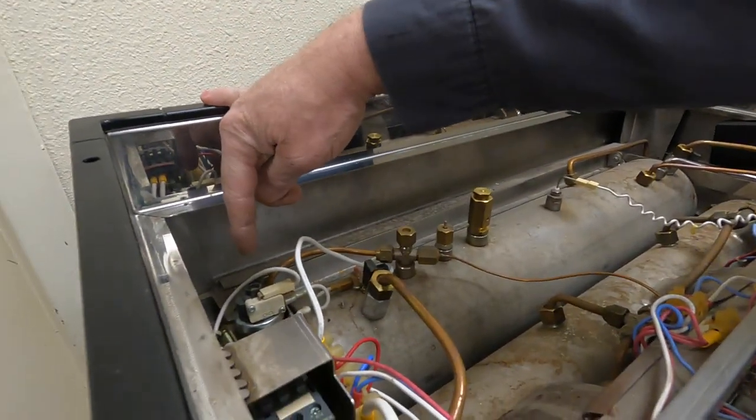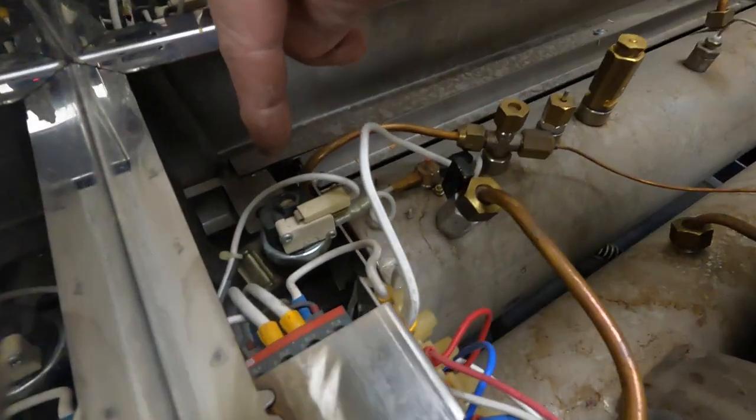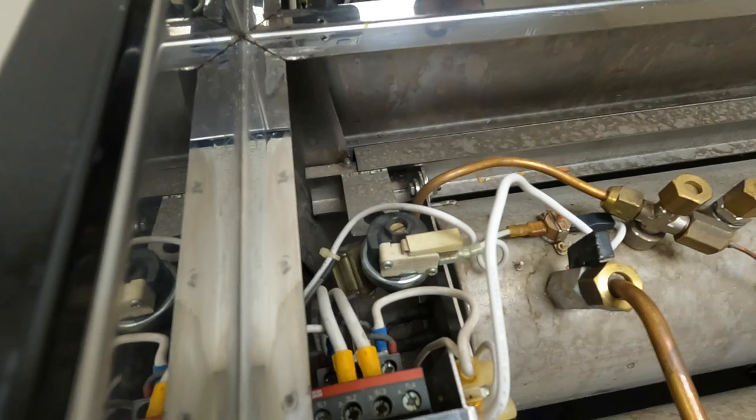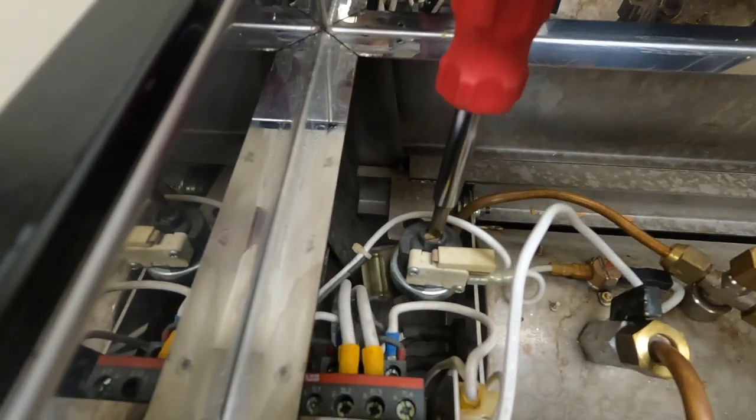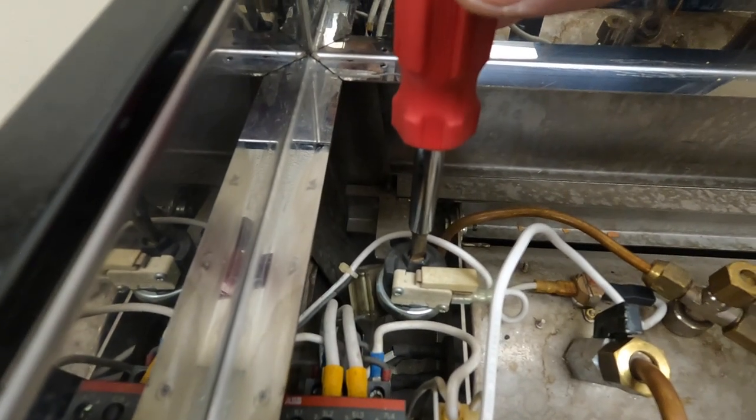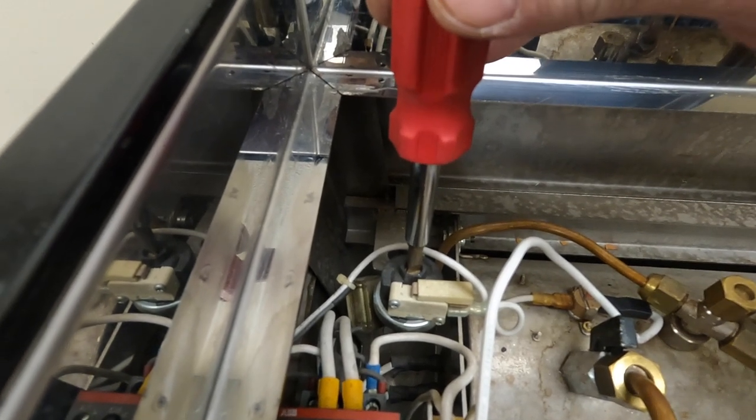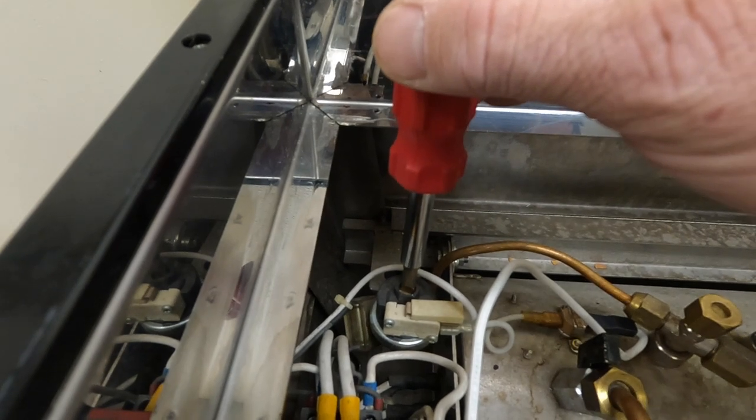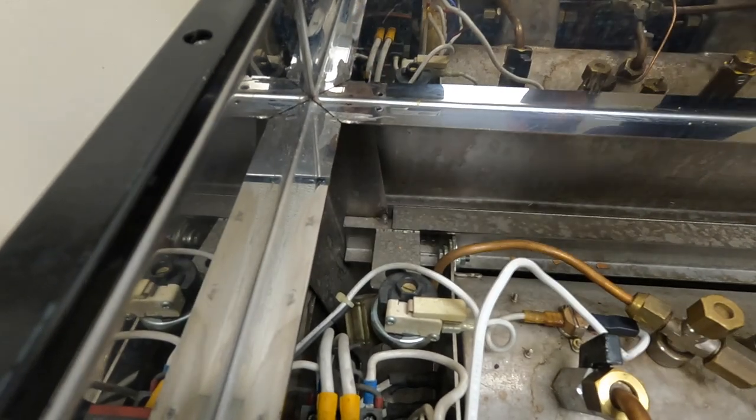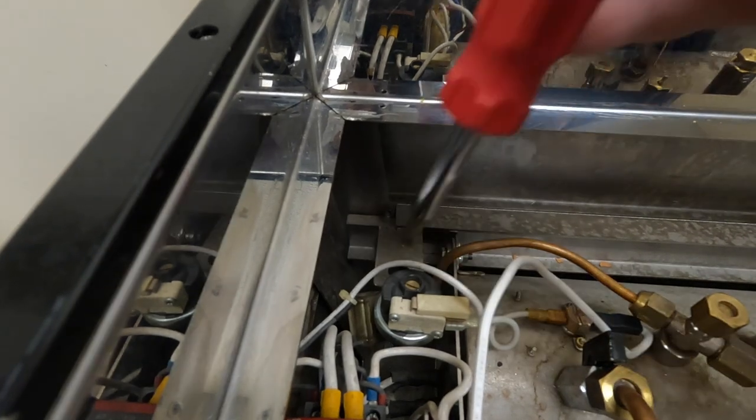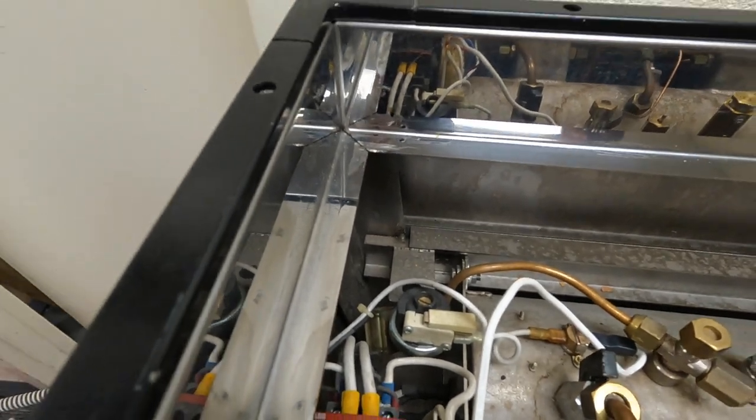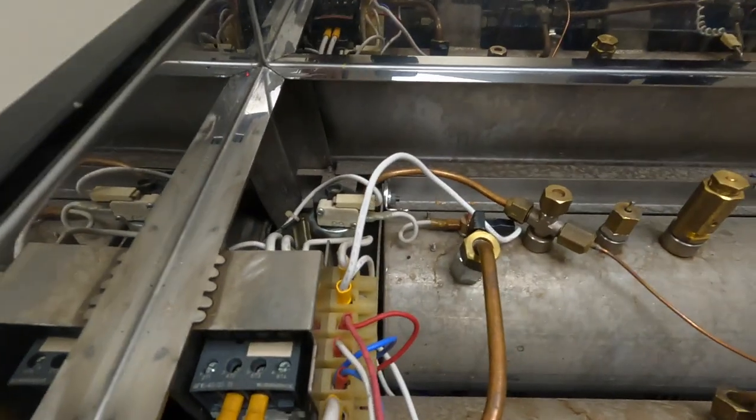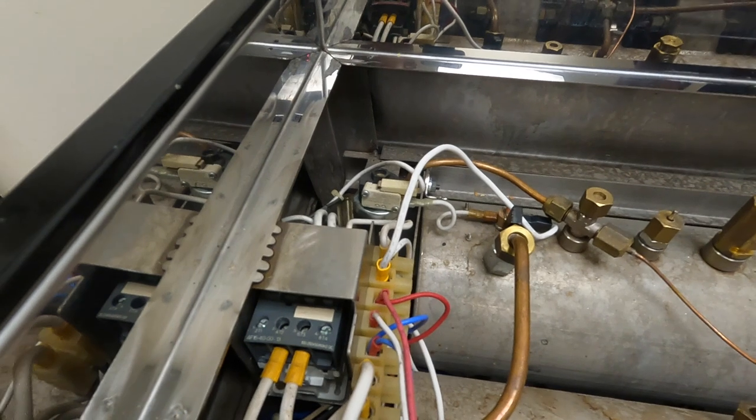Our pressure switch is over here. This is the newer style switch. When you're adjusting it, you're doing it in very small increments like an eighth turn, no more than a quarter turn increments. Clockwise you're increasing the pressure, counterclockwise you're decreasing the pressure.